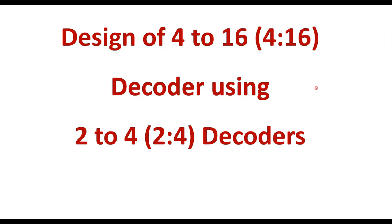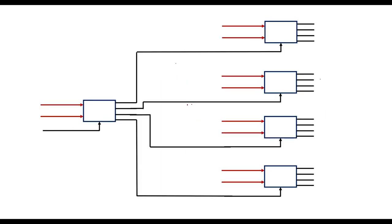To implement a 4-to-16 decoder we need 5 number of 2-to-4 decoders. The connection of the decoders will be like this.